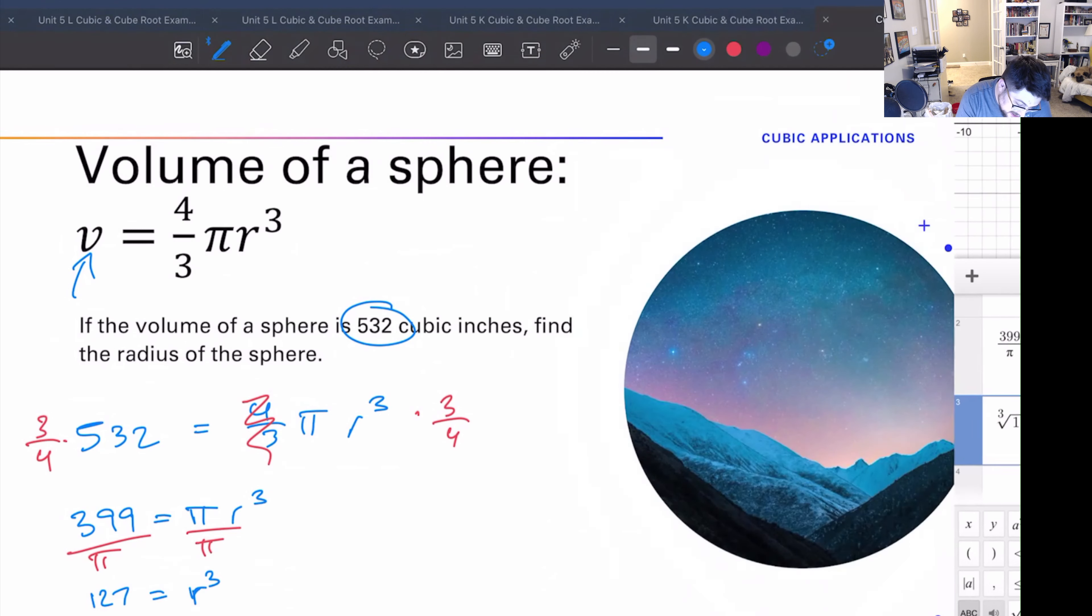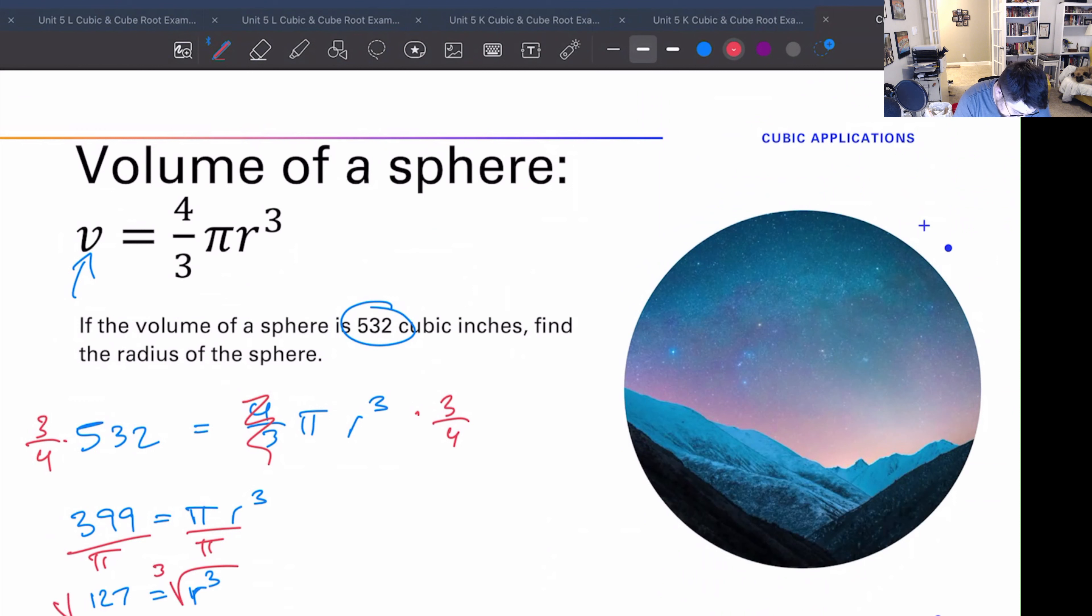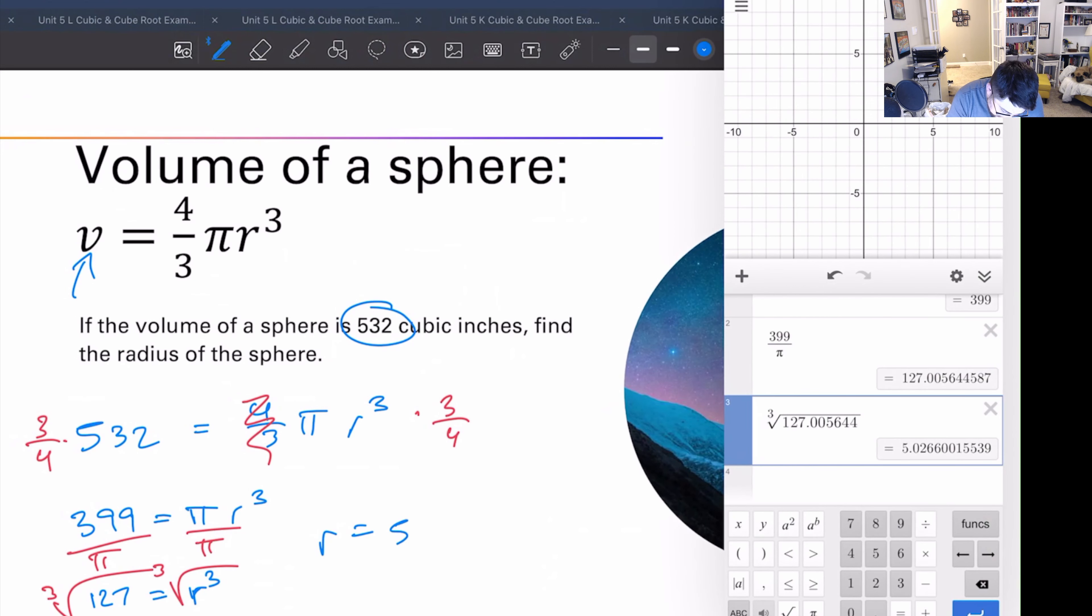Alright, 127.00564. Alright, I think I probably have enough level of accuracy for this because the reason why we're cube rooting, I didn't really explain, is to get rid of the cube. Doing kind of a terrible job explaining this. So what we end up with is r equals roughly 5.026, and let's say that we round to the hundredths, two decimal places. So I'm going to say that's 5.03 as we round up with the six.